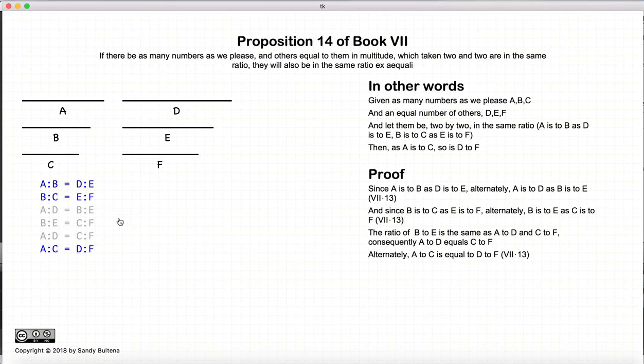And that's it. We have now demonstrated that if we have ratios A to B is equal to D to E, and B to C is equal to E to F, then the ratio of A to C is also going to be equal to the ratio of D to F.